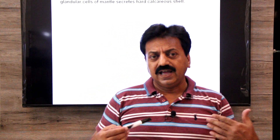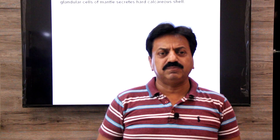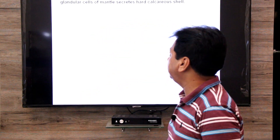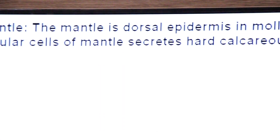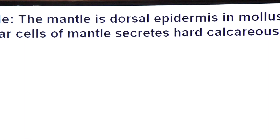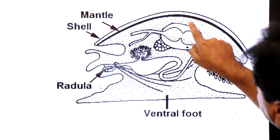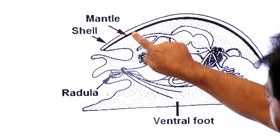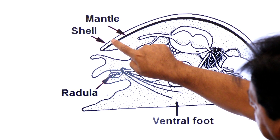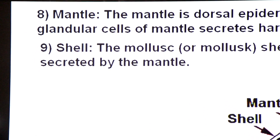Their dorsal epidermis is called the mantle. In the mantle there are glandular cells which secrete calcium carbonate. When the glandular cells of the mantle start secreting calcium carbonate, these particles form their hard exoskeleton known as the shell. So the mantle is the dorsal epidermis in mollusks having glandular cells, and these glandular cells secrete a hard calcareous shell made up of calcium carbonate. The shell is their exoskeleton, secreted by the mantle.